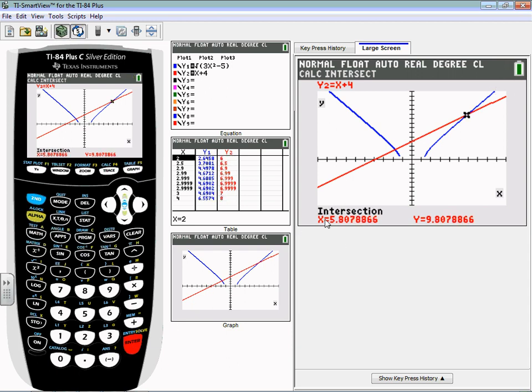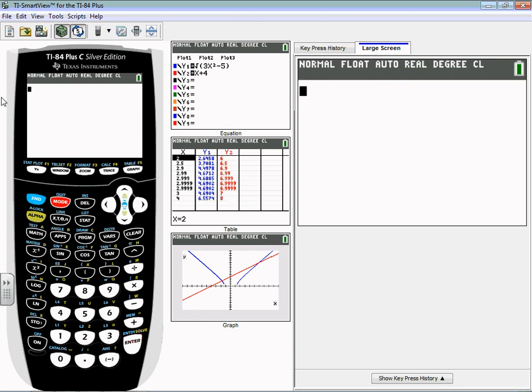And I get my first solution is 5.8078866, and that's a lot of different numbers. So what I'm going to do is put that on my home screen by quitting out of my graph and then just typing an X, because at least now we have that and we can see it all right there.